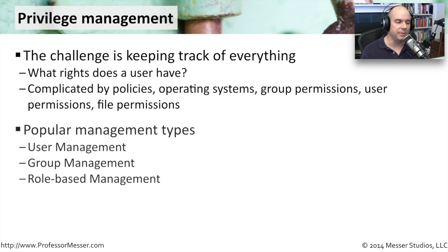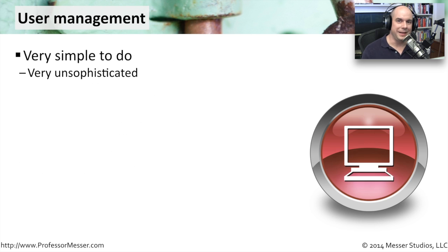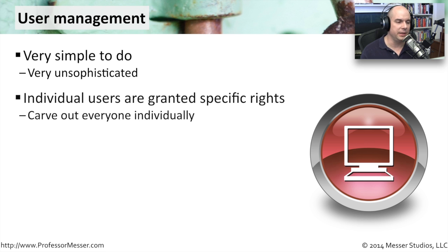To be able to set some of these privileges, we do privilege management through user management, group management, and role-based management. User management is something that's very easy to do — it's done on a user-by-user basis, it's very simple, but it's also very unsophisticated. There's not a lot of flexibility. We go to a specific user, grant them specific rights, and you're done. You've now created the rights, permissions, and privileges for that user.